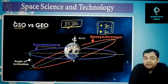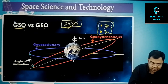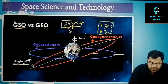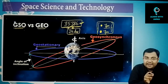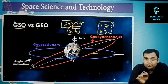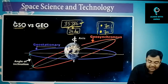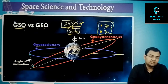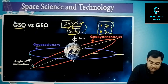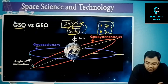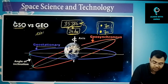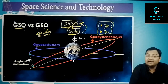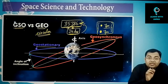Geostationary orbit also operates at 35,786 kilometers. This precise height is required to achieve a 24-hour period of revolution — a calculated height to match Earth's rotation. The geostationary orbit is always circular with zero degree inclination with respect to Earth's equator.